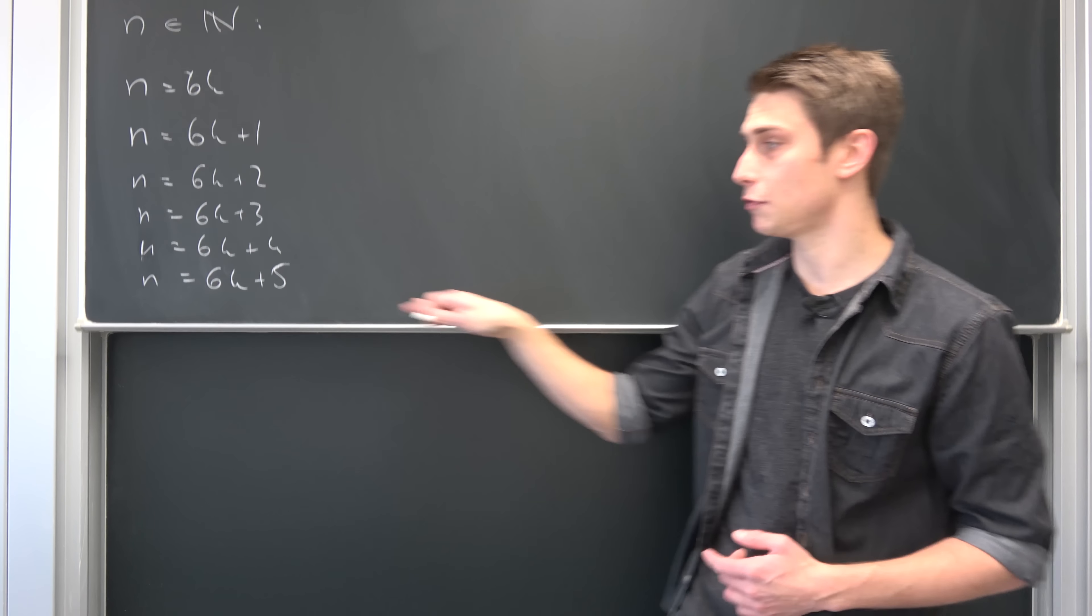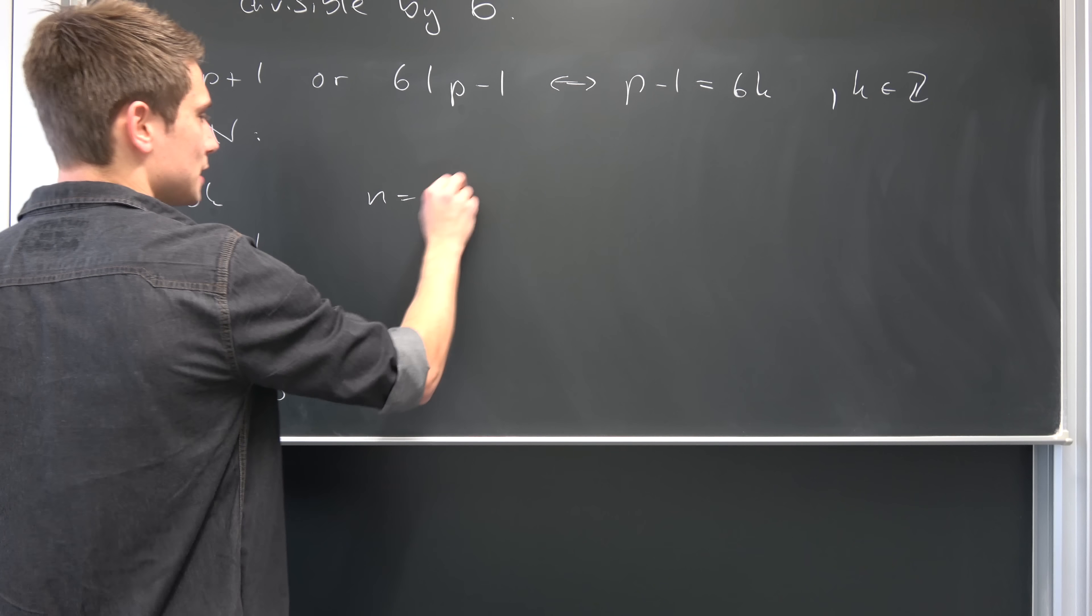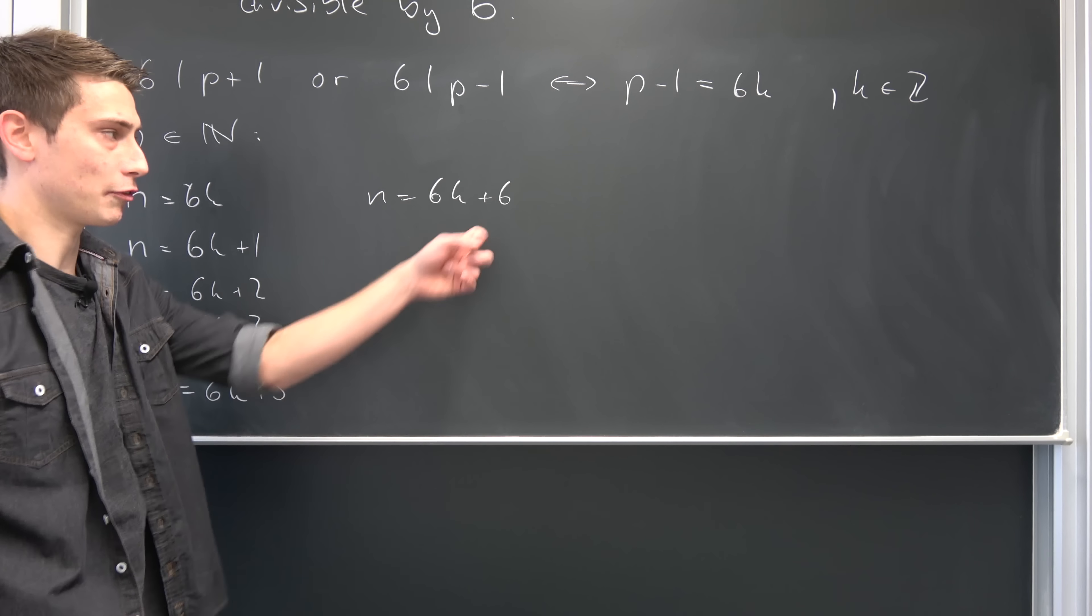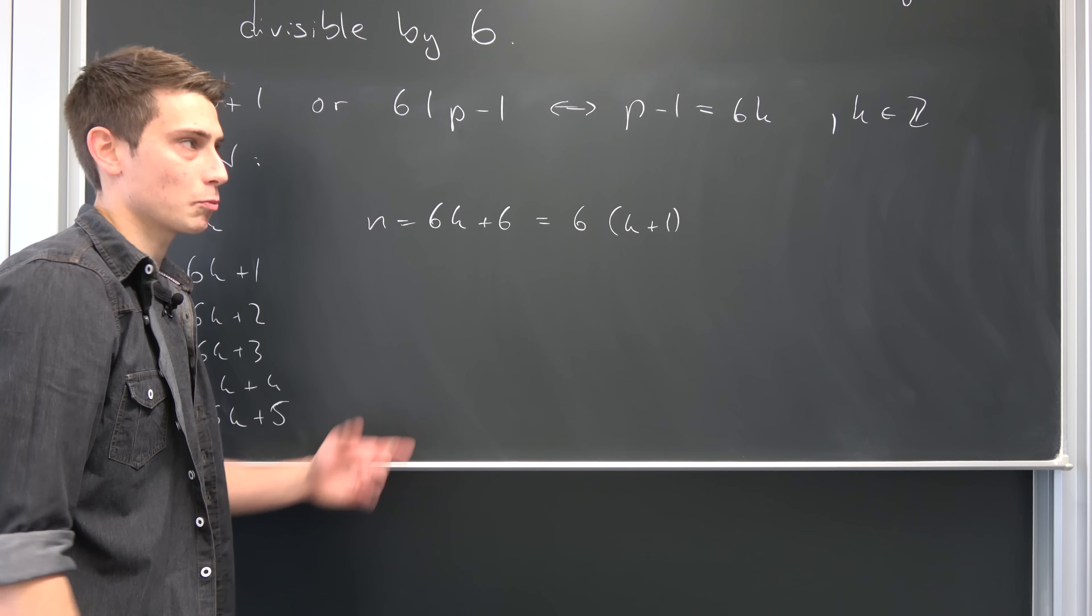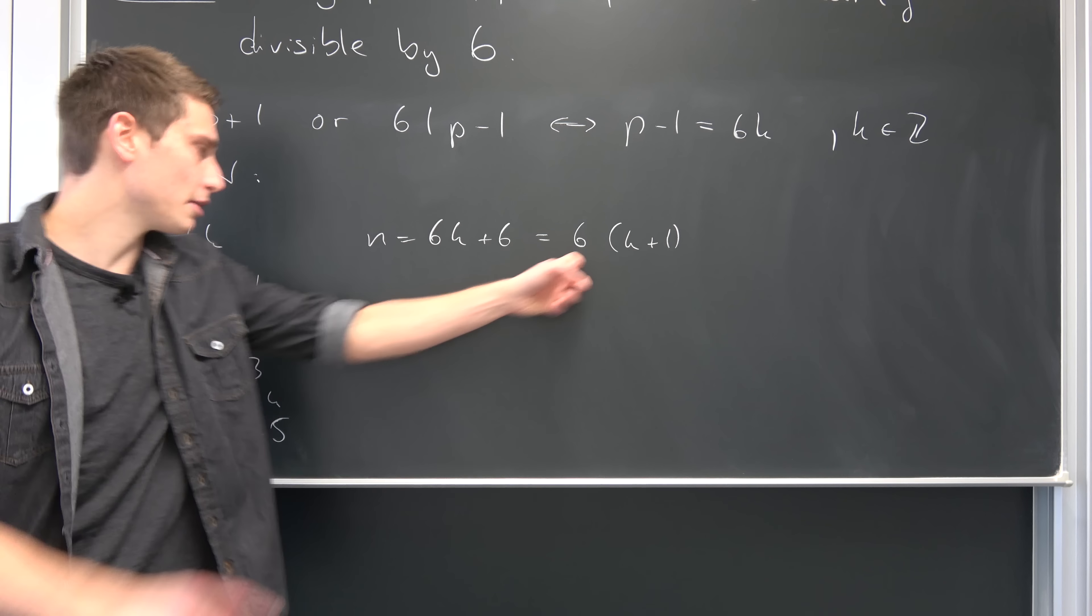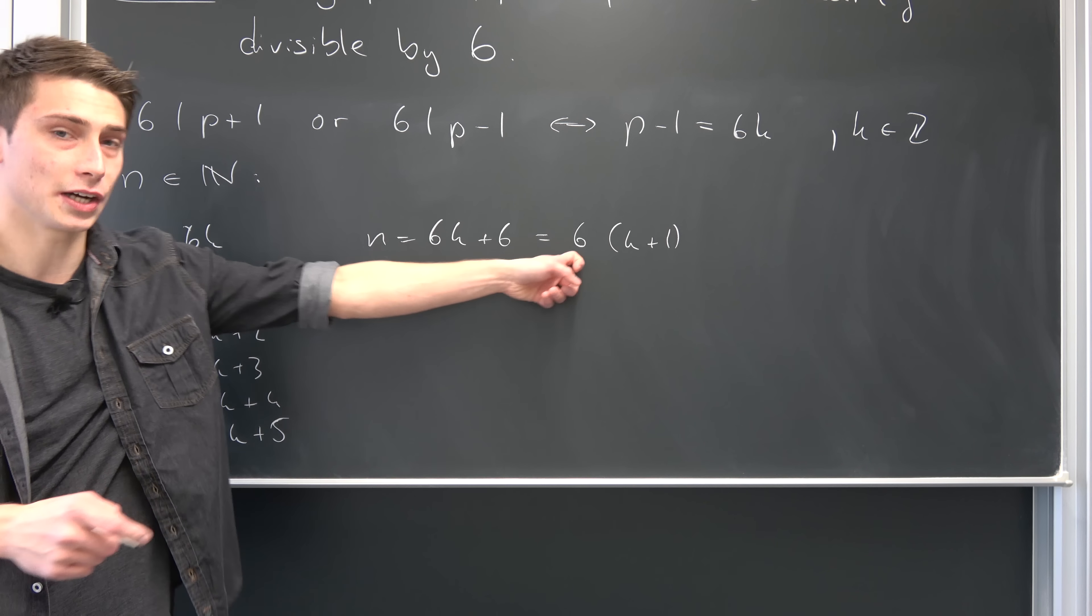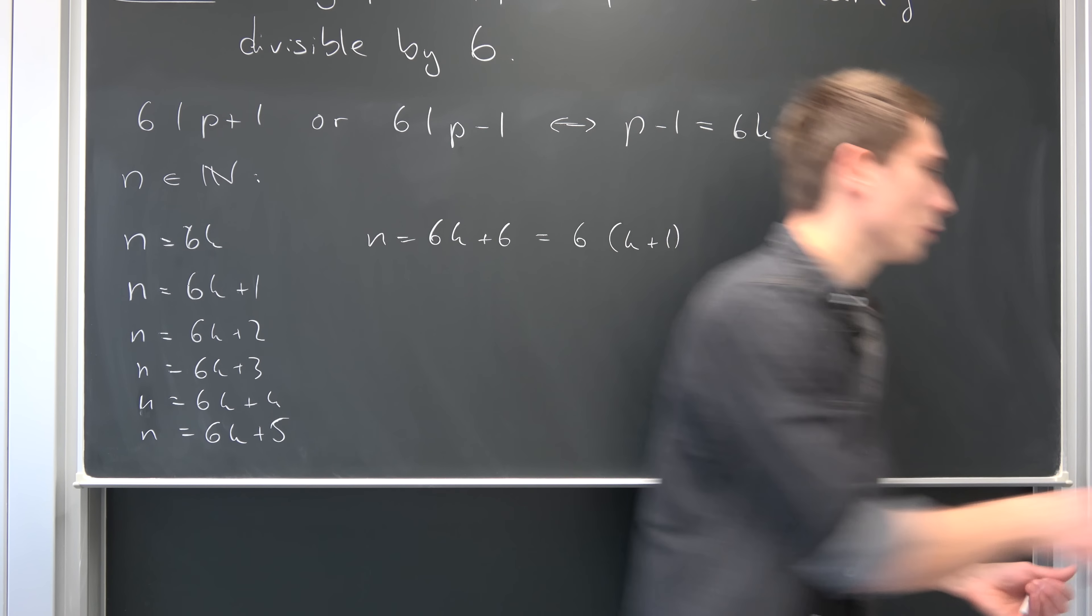Why are those all the cases? Well, if we go one step further, n equals 6k plus 6, we can factor out the 6, giving 6 times (k plus 1), and k plus 1 is once again just an integer, meaning that would be the same definition as this right here, that 6 divides this number n. I hope you can see where this came from.